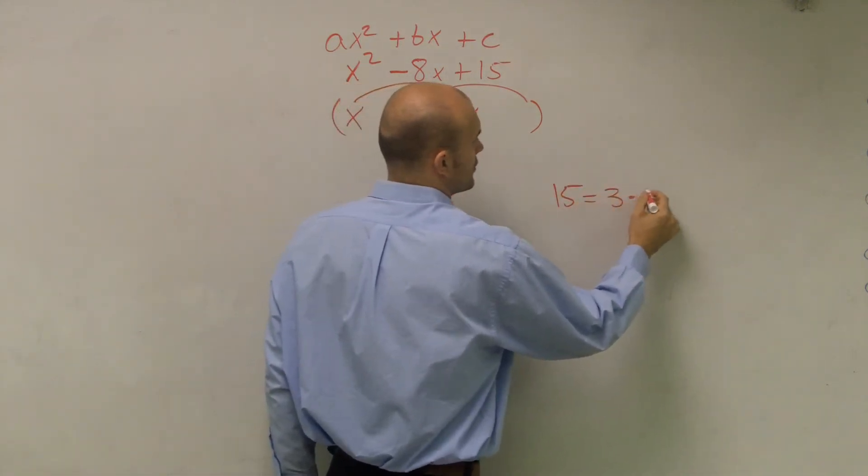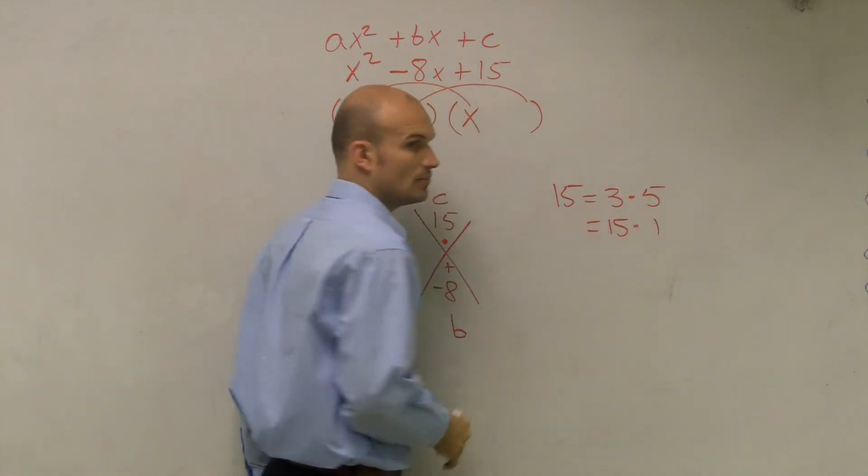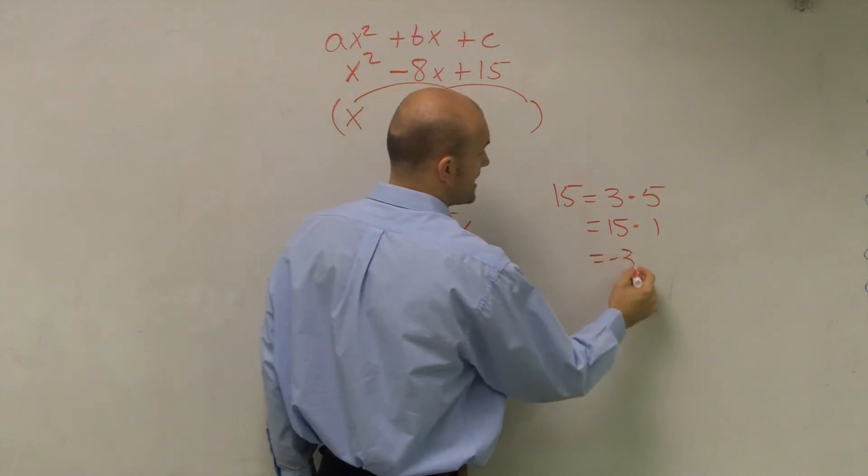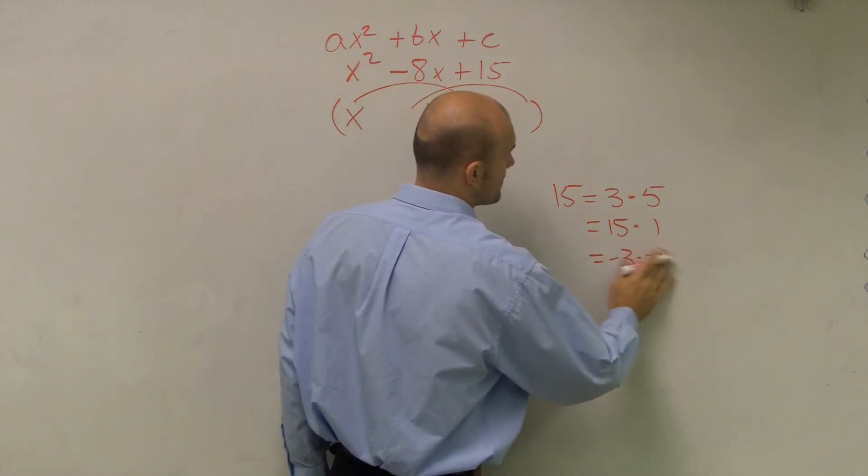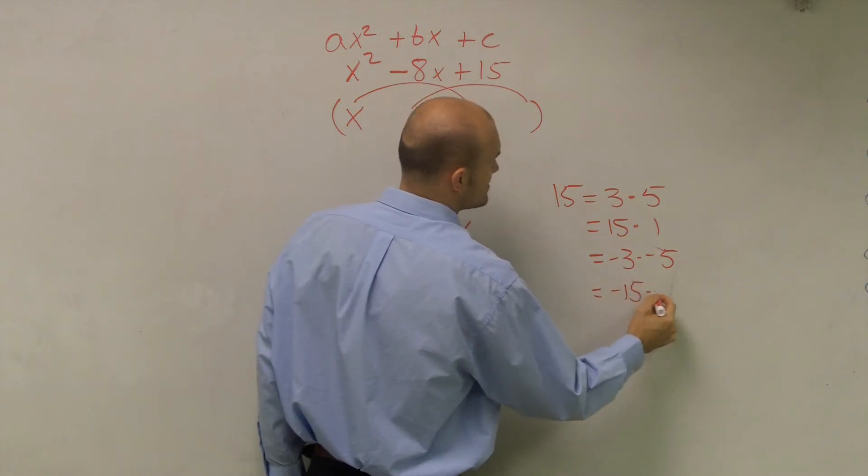15 could be 3 times 5, and 15 times 1, right? Also, you could do negative 3 times negative 5, or negative 15 times negative 1.